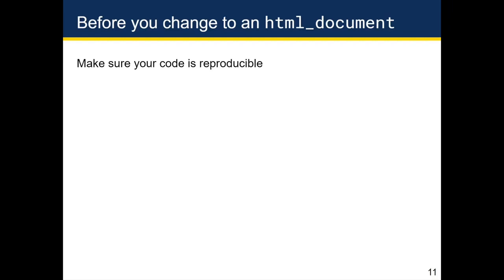If you had code that was not reproducible — for instance, a data set you didn't load in, or a package you didn't library in within your actual R Notebook — your code might still work as long as that package had been loaded elsewhere, whether in a different document or typed into your console.